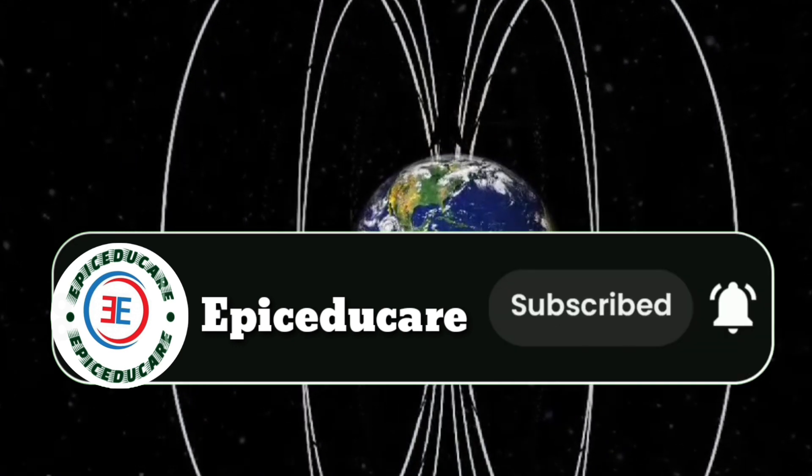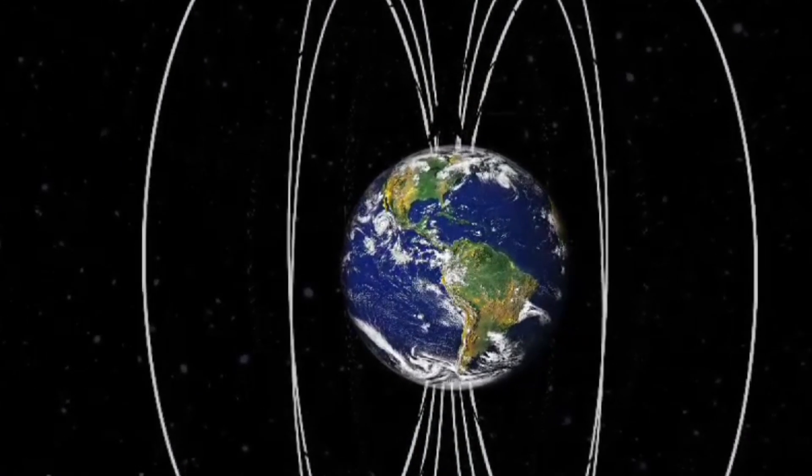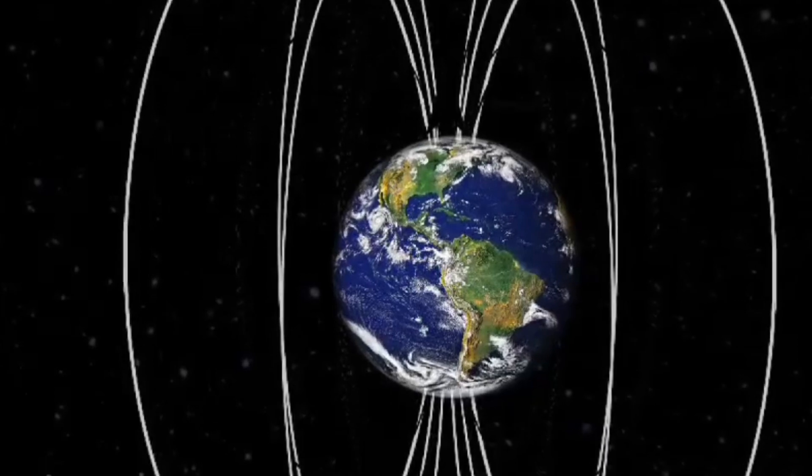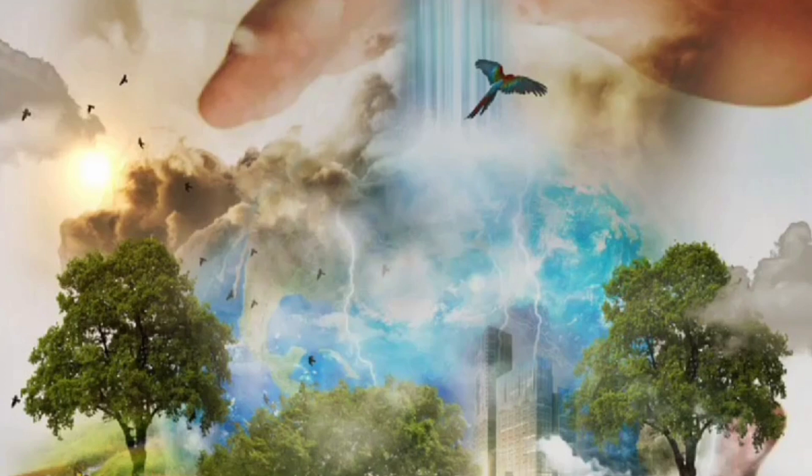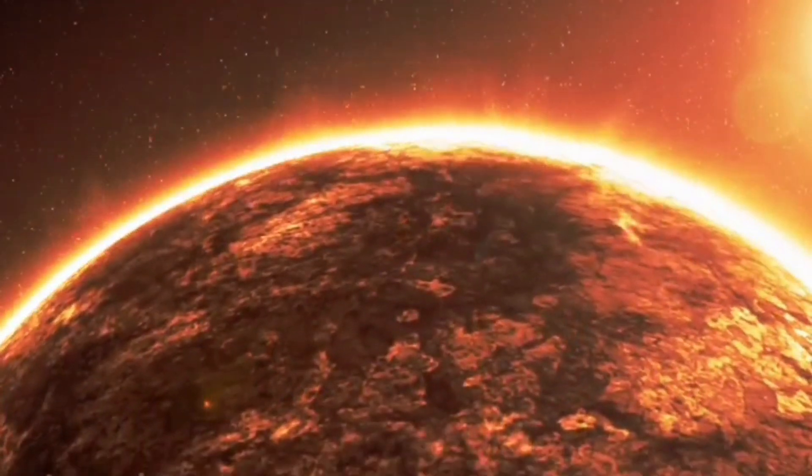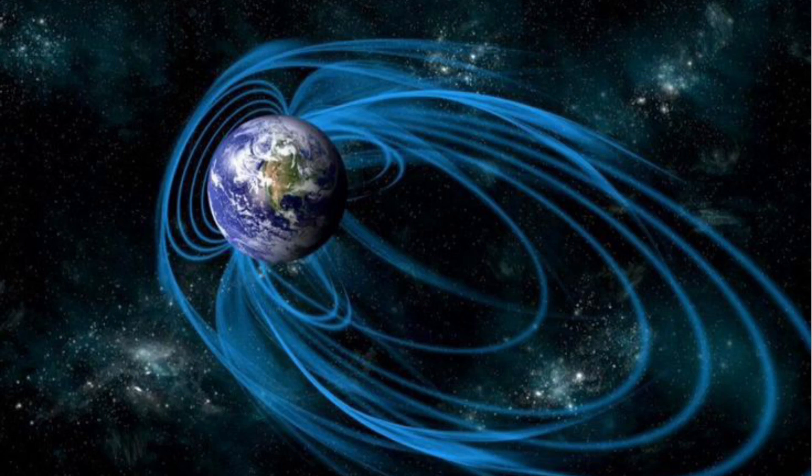This concept was introduced by William Gilbert. He suggested that Earth itself behaves like a huge magnet. This magnet is so oriented that its S-pole is towards geographic north and N-pole is towards the geographic south.